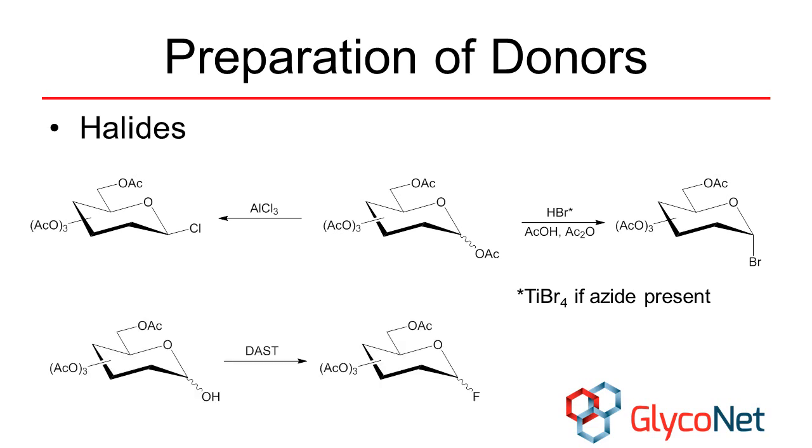Fluoride donors are the only type of halide donor that is hydrolytically stable. One common method of preparation is to react the protected reducing sugar with DAST.